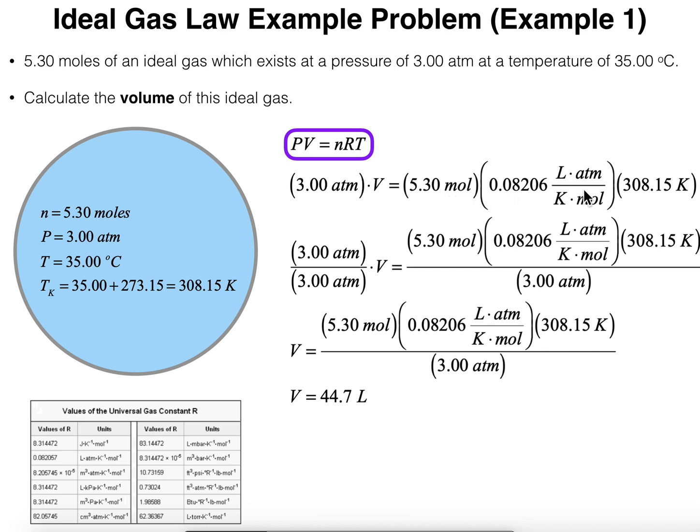So now I've input all of my variables that I know. Now I can solve for volume. Algebraically, the way I'd solve for volume is divide both sides by 3.00 atmospheres. So that leaves on the left side, we have volume equals 5.30 moles times our gas constant, 0.08206 liter atmospheres per Kelvin per mole times the temperature, 308.15 Kelvin, and then divide by the pressure, 3.00 atmospheres. And when I actually compute this quotient, I get 44.7.